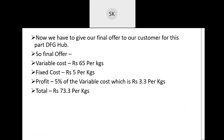Now we have to give our final offer to the customer for DFG hub. Our variable cost is Rs.65 per kg and our fixed cost is Rs.5 per kg, giving a total of Rs.70 per kg. Adding a profit margin, our total cost comes to Rs.73 per kg.